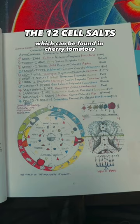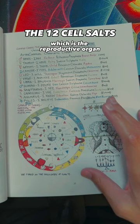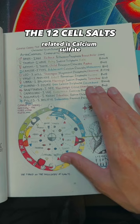October 23rd to November 21st belongs to Scorpio, which is the reproductive organ or the generative system and represents the sexually active stages and the cell salt related is calcium sulfate, which can be found in cucumbers.